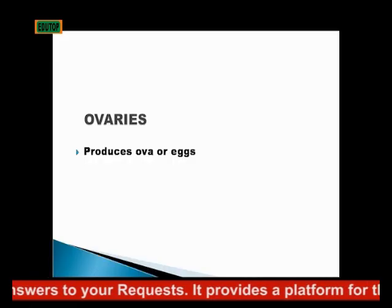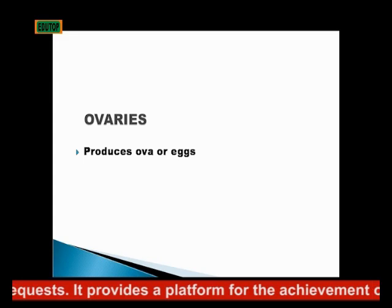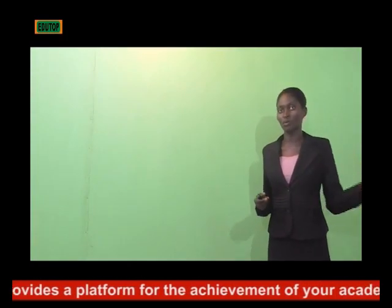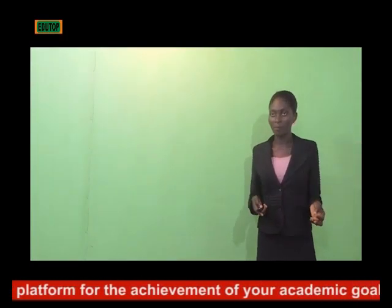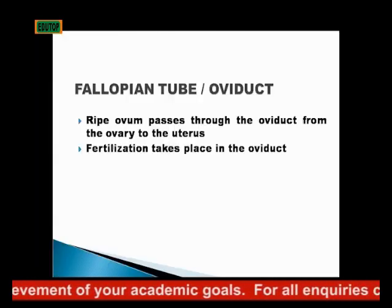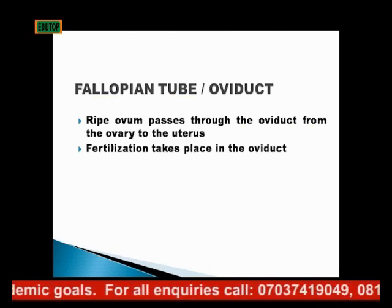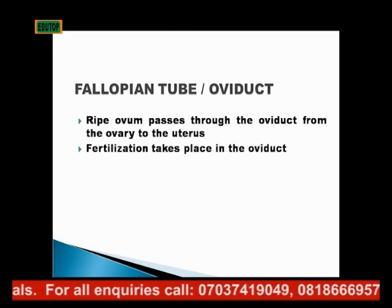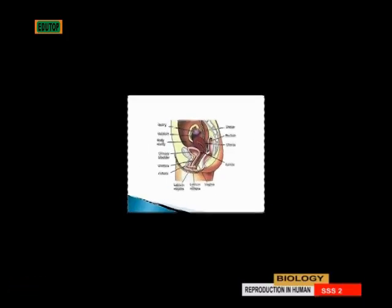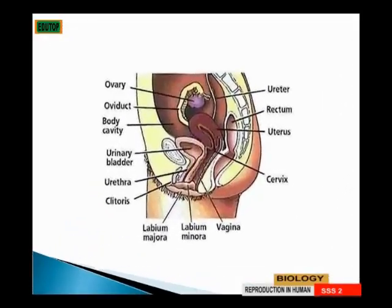The first part is the ovaries. The ovaries produce the egg or the ovum, which is fertilized by the sperm to become an embryo. The fallopian tube, also called the oviduct, is the passage through which the egg travels from the ovary to the uterus. From the diagram, you can see the ovary, and the oviduct holds the egg before it is moved to the uterus.